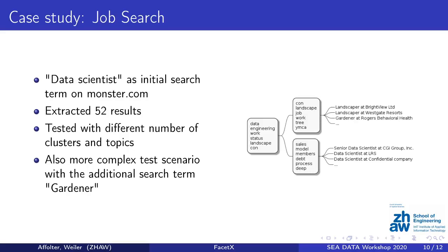The last case study was a search for job offerings on the platform monster.com. We searched for job offerings using the term 'data scientist' and extracted 52 results. We tested different numbers of clusters and topics in the leaf, and also tested a more complex scenario where we mixed in search results for the term 'gardener'. FacetX was able to divide those two different job offering types and generate meaningful facets.